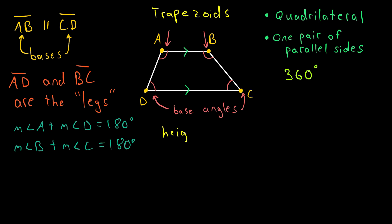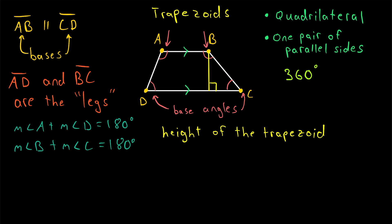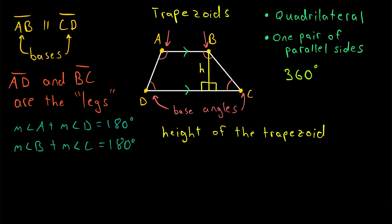One last thing we'll mention is the height of the trapezoid. To measure the height, all we do is draw a perpendicular from one base down to the other base. Since this segment is perpendicular, it forms right angles with both bases. The height of the trapezoid is the length of this perpendicular segment. You could draw it anywhere between the two bases — it just has to be perpendicular from one base to the other. The height will be used in calculating the area of the trapezoid.